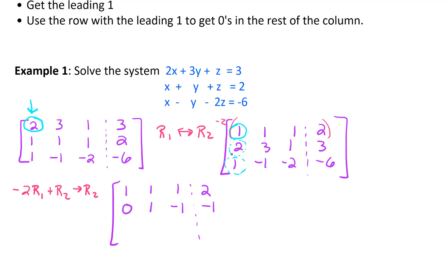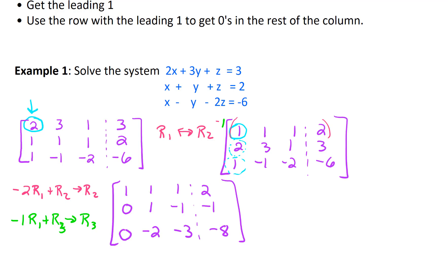We also want to get rid of the one in the third row. To do that, we go negative one times row one plus row three and put the result in row three. Multiplying by negative one, we get zero for that third row's first entry, then negative two, then negative one times one plus negative two gives negative three, and lastly negative eight. First column looks great — we have our one in row one, column one, and zeros everywhere else.